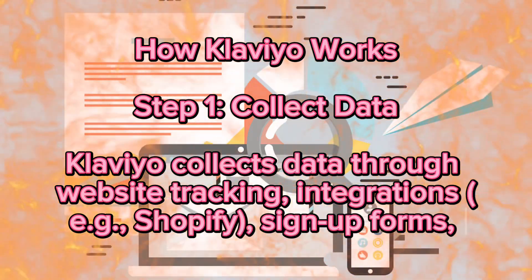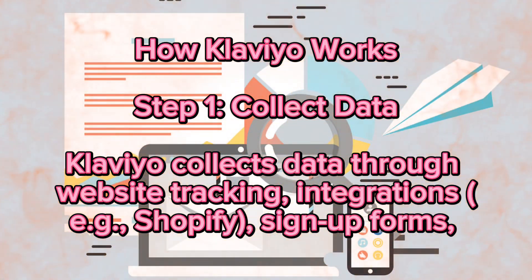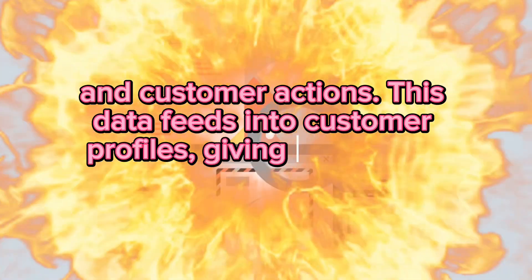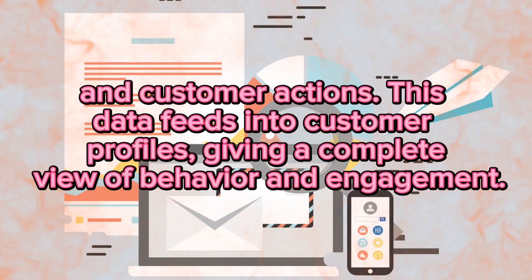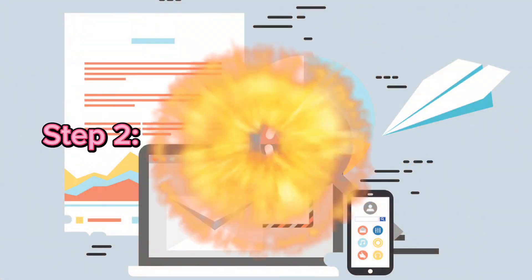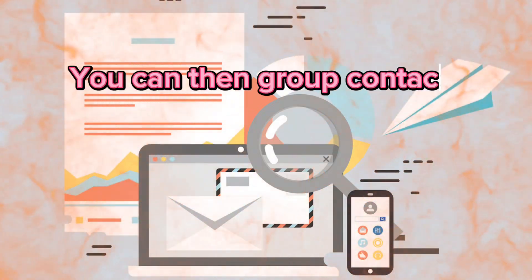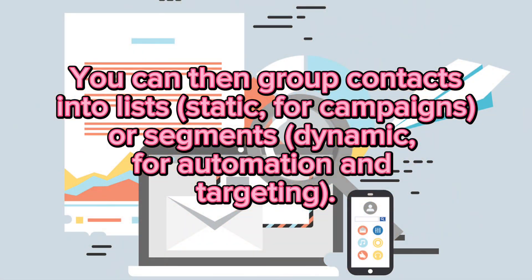How Klaviyo Works. Step 1 – Collect Data: Klaviyo collects data through website tracking, integrations (for example, Shopify), and sign-up forms. This data feeds into customer profiles, giving a complete view of behavior and engagement. Step 2 – Build Segments and Lists: You can then group contacts into lists (static, for campaigns) or segments (dynamic, for automation and targeting).